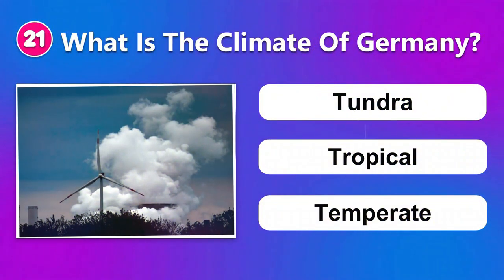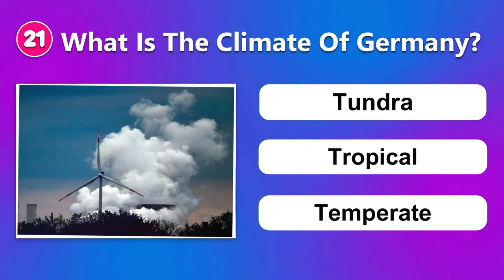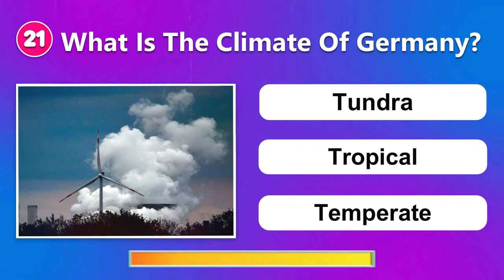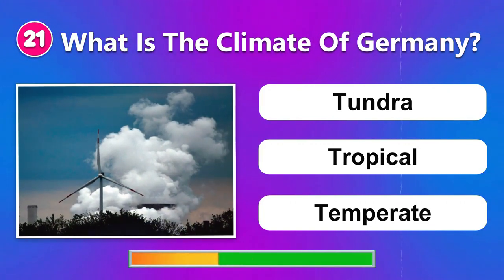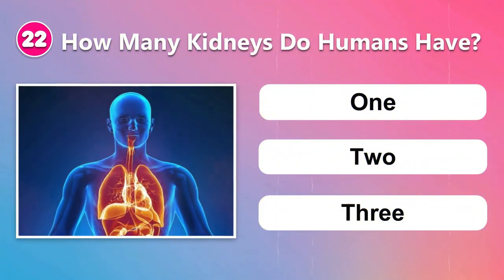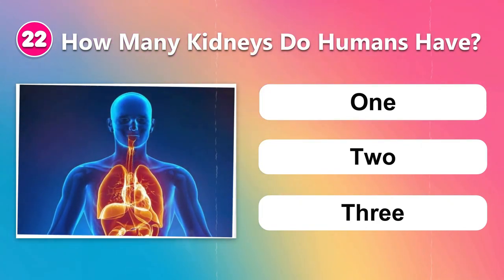Number twenty-one: What is the climate of Germany? Tundra, tropical, or temperate. Number twenty-two: How many kidneys do humans have? 1, 2, or 3.